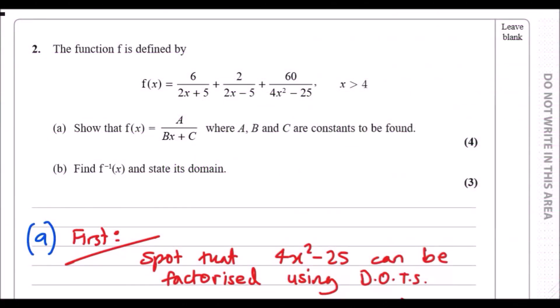Hey, question 2, let's go. So the function f is defined by the following. Show that this function can be written as a linear one, as in A over Bx plus C, where each of these terms are constants.